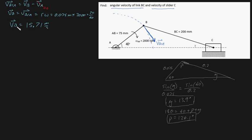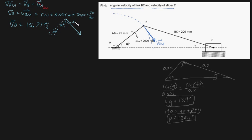VB is both a direction and a magnitude. We know its direction and its magnitude, so let's combine them. This is going to be the direction of velocity of B. We also know the angle it makes — by constructing an imaginary line parallel to this link, we know this is 40 degrees, which means we can construct an imaginary vertical line and say this is 50 degrees, meaning this angle here is 40 degrees.